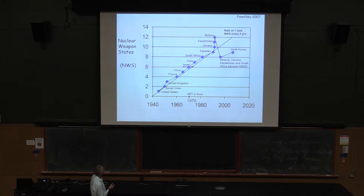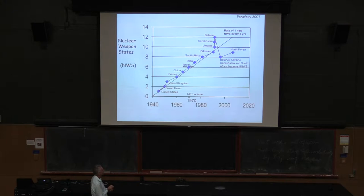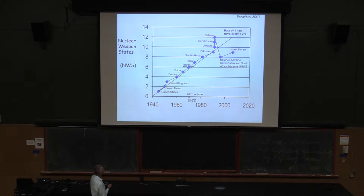This is another Panofsky plot — the number of nuclear weapons states versus time. Basically every five years a nuclear weapons state was added. The breakup of the Soviet Union caused it to jump, but then most countries gave up their weapons. South Africa is the only country to ever have had a nuclear weapon and then gotten rid of it. Without the Iran deal, you could predict Iran would have been next, then quickly Saudi Arabia and others. The more countries that have nuclear weapons, the more likely they're going to make the kind of mistake I made in my office.